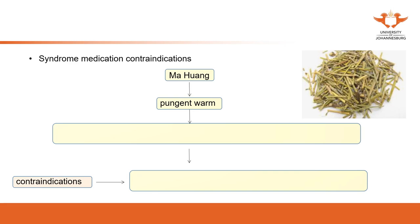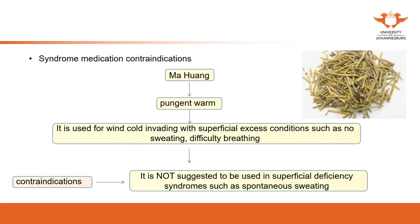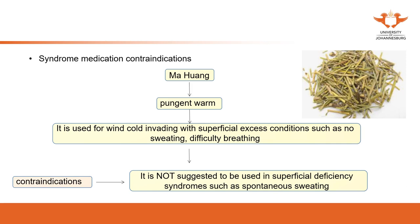For example, for the syndrome and medication contraindications: Ma Huang has a pungent and warm property. Because it is warm and pungent, it can disperse, so it can be used for wind cold and for a superficial excess condition with no sweat and difficult breathing. However, if a patient presents with superficial deficiency such as spontaneous sweating, we don't use Ma Huang — it becomes a contraindication, as spontaneous sweating implies superficial deficiency rather than superficial excess.